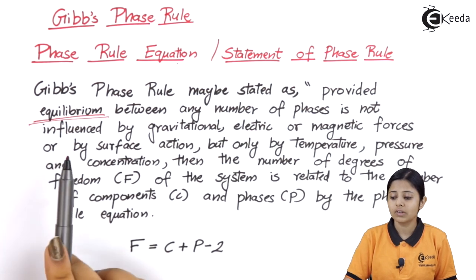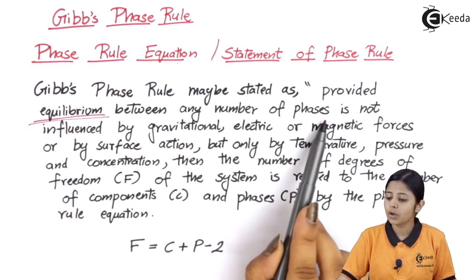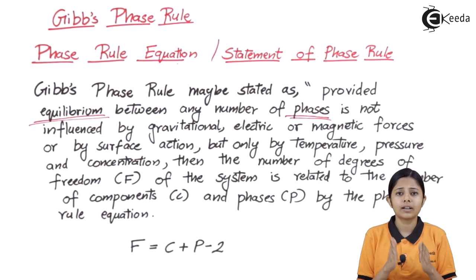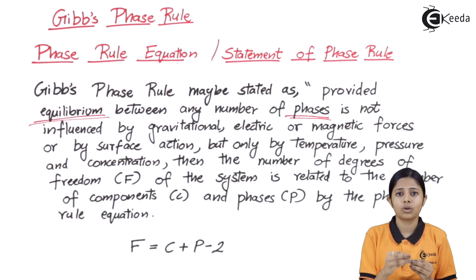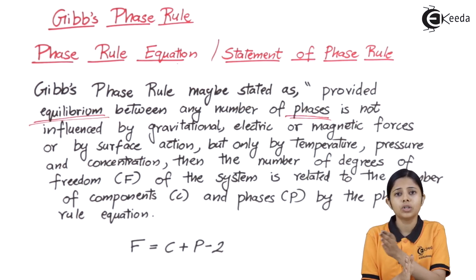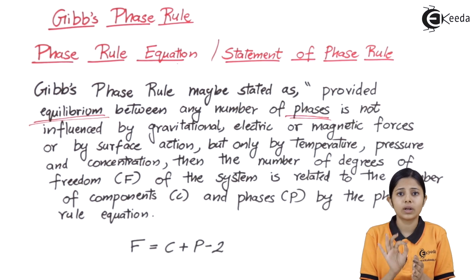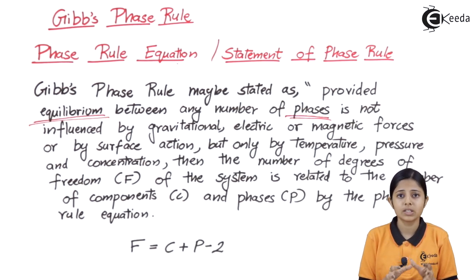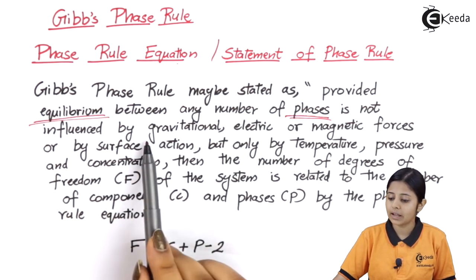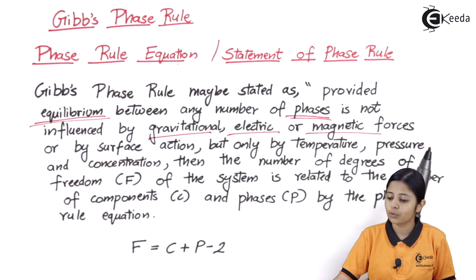At any system, whenever I have an equilibrium between the number of phases — now what do we mean by phases? Phases are the different phases: we have the solid phase, liquid phase, semi-solid phase. For example, if I have a liquid phase going into a solid phase, it will have a freezing point. So from one end of the freezing point it will be a liquid phase, and from the other end it will be a solid phase. There are different phases of the components present in a system, and it is not influenced by gravitational, electric or magnetic forces.